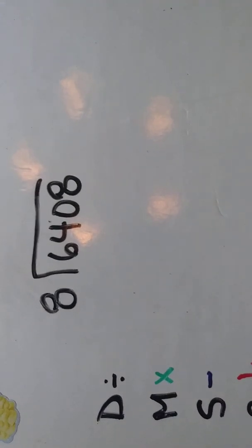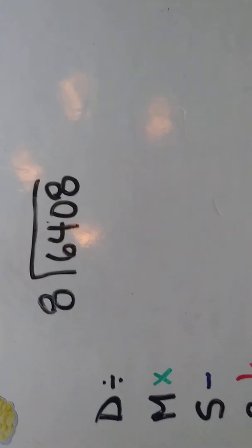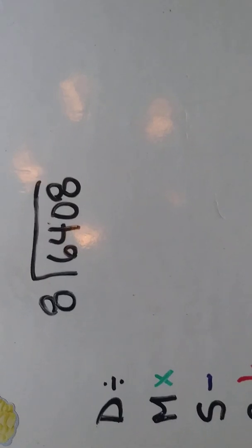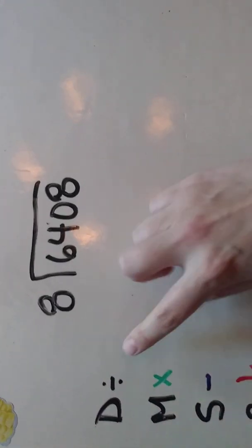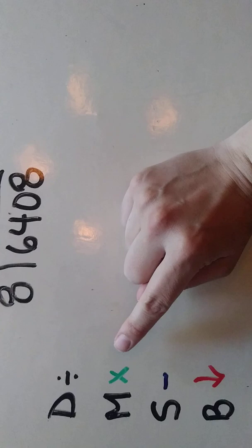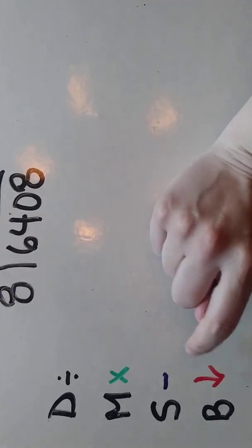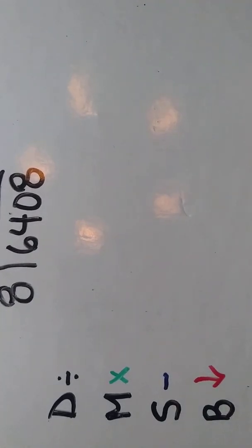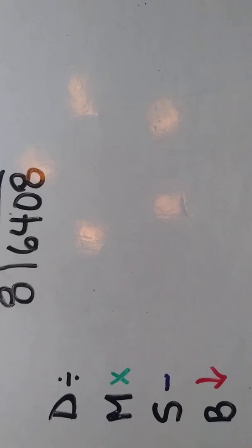Hi there, this is the second video in the series of long division but with a new method. In the first video we talked about the mnemonic device to help us remember: dangerous monkeys swing backwards. That stands for division, multiplication, subtraction, and bring down, and those are the steps that we're going to follow to do our long division because it is indeed long.